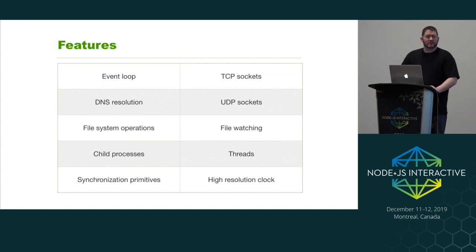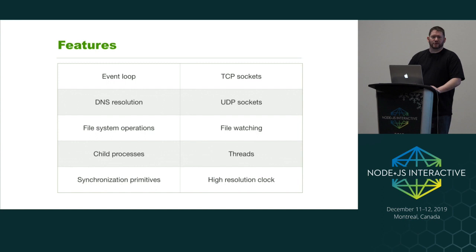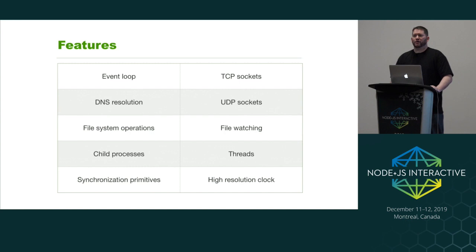Some of the features that come from LibUV: the event loop is obviously a really big one in Node. TCP sockets — in Node that basically translates to the net module. DNS resolution — some system calls come from a library called C-ares, but LibUV also implements some DNS stuff. UDP sockets map to Node's dgram module. File watching and file system operations — just about everything in the fs module goes through LibUV. Child processes and threads, synchronization primitives like mutexes, and a high-resolution clock via process.hrtime.